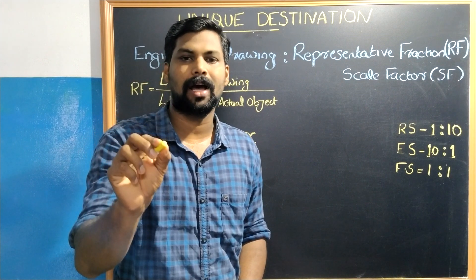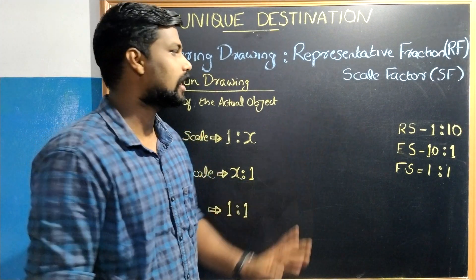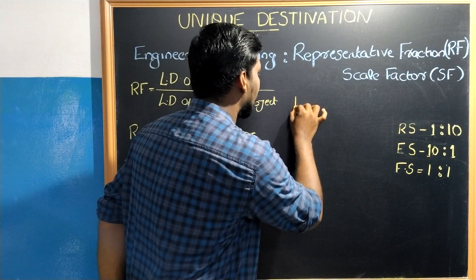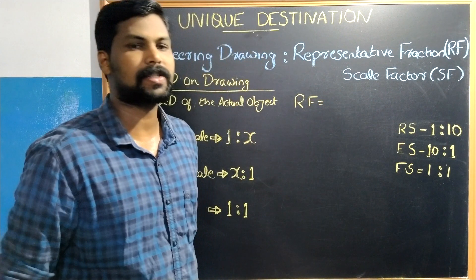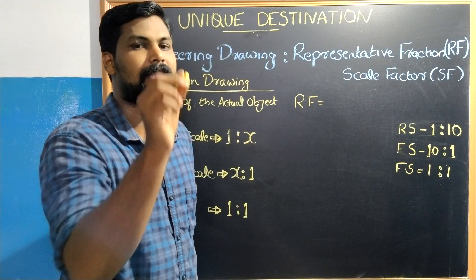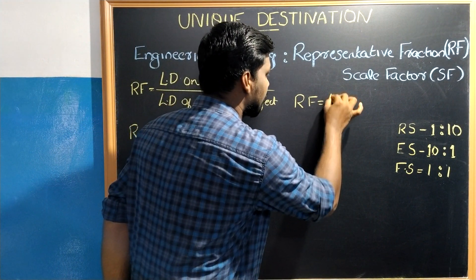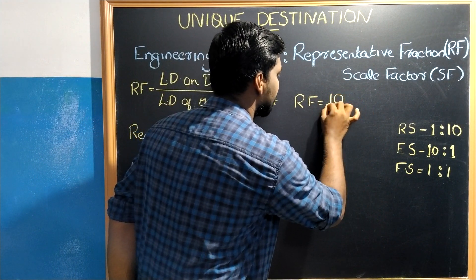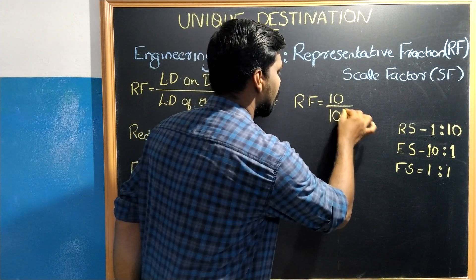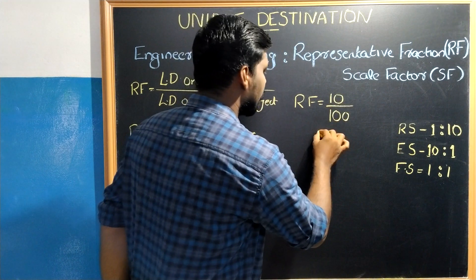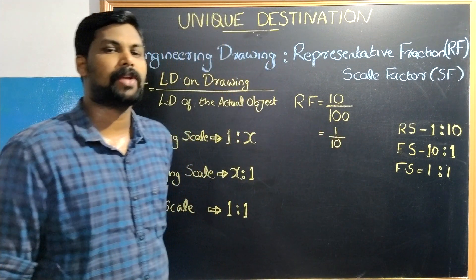I have an object in the drawing sheet of 10 centimeters. The representative fraction is the distance on the drawing — 10 centimeters — divided by the actual distance, that is 100 centimeters. So we have 1 by 10 as the representative fraction.